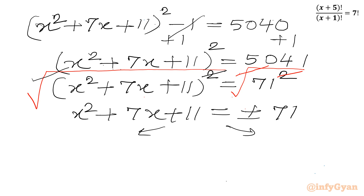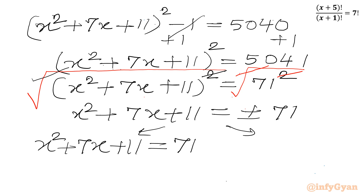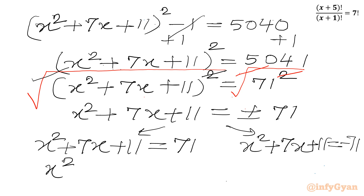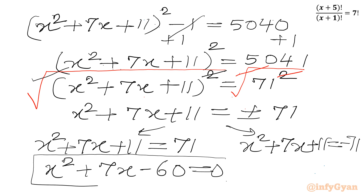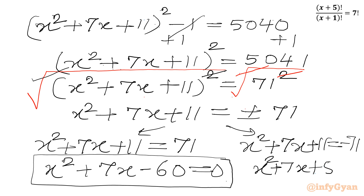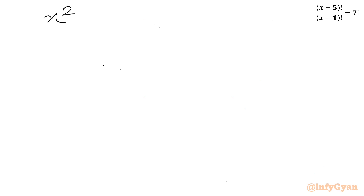This gives us two equations. The first: x² + 7x + 11 = −71, which simplifies to x² + 7x + 82 = 0. The second: x² + 7x + 11 = 71, which gives x² + 7x − 60 = 0. Both are quadratic equations, so we can use the quadratic formula.